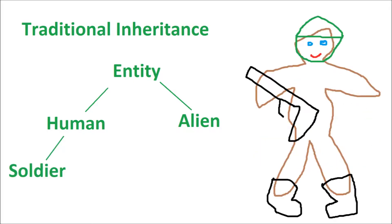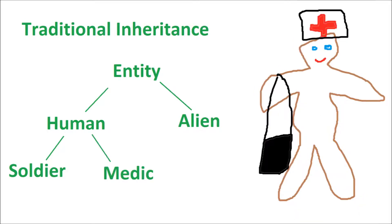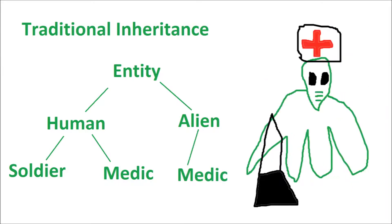Stepping down further, we have a soldier. Note that underneath, he is still a regular human. We have also added combat boots, a gun, and a tin hat — all functionality unique to soldiers. Another class that inherits from human is the medic. The medic is still a human being underneath, but they also have a doctor's hat and bag. Seems like a good idea so far?